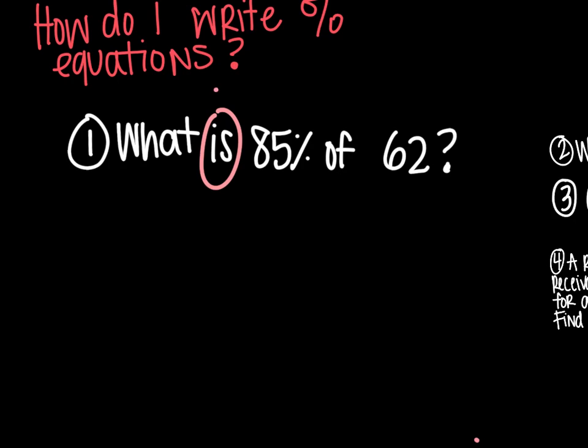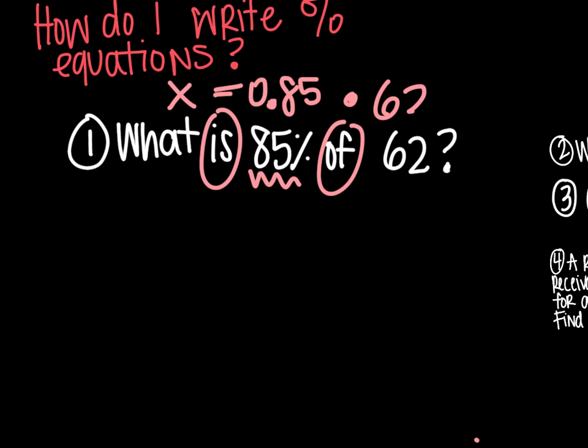So we want to find the important words first. Is in math is our equal sign. And of is multiplying, so that makes it easy. And then we always want to turn our percent into a decimal. So you back it up, back it up. You get 0.85. So our equation of what is, that's what we're trying to find. That's our variable. Equals 0.85 times 62.